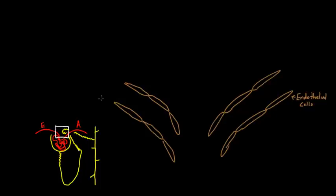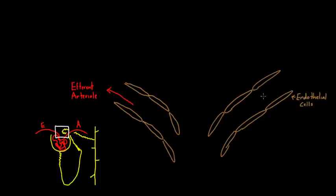Over here is the efferent arteriole, and of course the other one is the afferent arteriole. I'm going to reverse this arrow so there's no confusion about direction of blood flow. So I've got my blood vessels labeled, and between the two I also have the distal convoluted tubule. Let's draw that in - these are the cells surrounding that distal convoluted tubule.